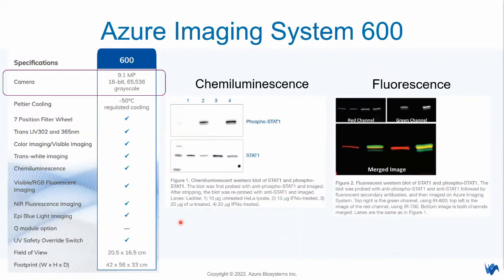Regarding the technology evolution, if you look at the specs of the Azul Imaging System 600, the camera specification contains a 9.1 megapixel camera with 16-bit resolution, giving you 65,000 grayscale steps. This camera can capture all images and signals from your gel — DNA gel, RNA gel, Western blot covering both chemiluminescence and fluorescence western, and even colorimetric western as well.